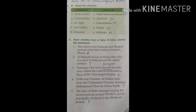Exercise C: state whether true or false; if false, correct the statement. First: the rulers in the Sultanate and Mughal periods called the Indian dominion Bharat — answer is false; they called it Hindustan. Second: Al-Masudi was an Arab traveler who traveled to India around the 18th century — it's true. Third: Domingo Paes was a French traveler who visited the court of Krishnadevaraya of the Vijayanagara Empire — the statement is false because he was a Portuguese traveler.